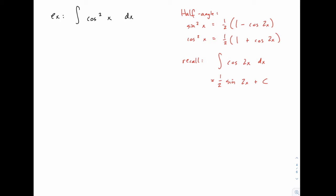So in this case we have cosine squared. If we had for instance sine squared and cosine squared we would use both half angle identities, but in this case we only need to use the second one and we can rewrite cosine squared as 1 half—and I'll distribute the 1 half here—so we get 1 half plus 1 half cosine of 2x.